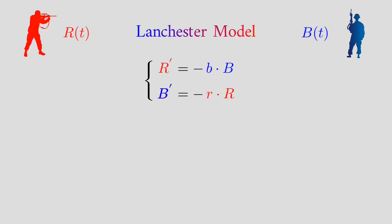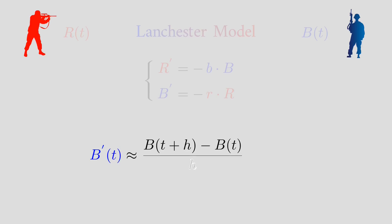Same thing for B prime. The rate of change of the number of blue army soldiers, it will be negative because there will be casualties and it will be proportional to R. And small r is going to represent the fighting effectiveness of the red army.